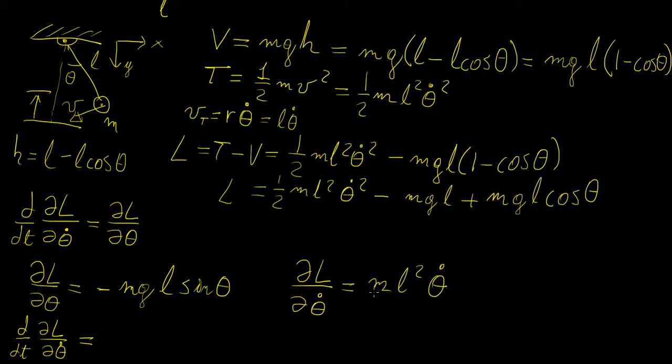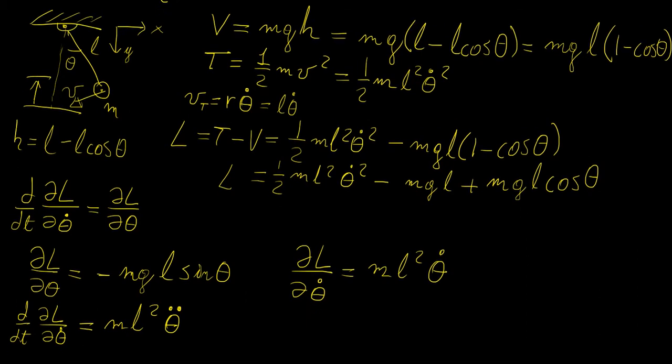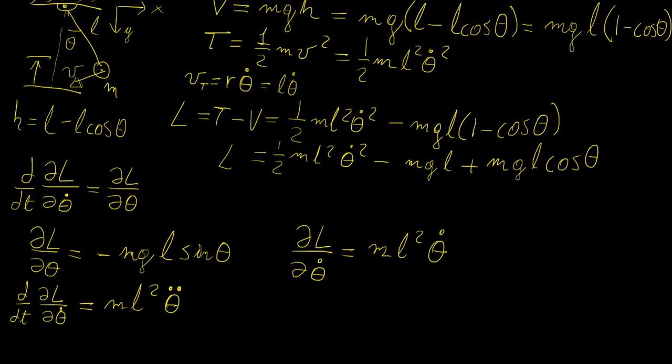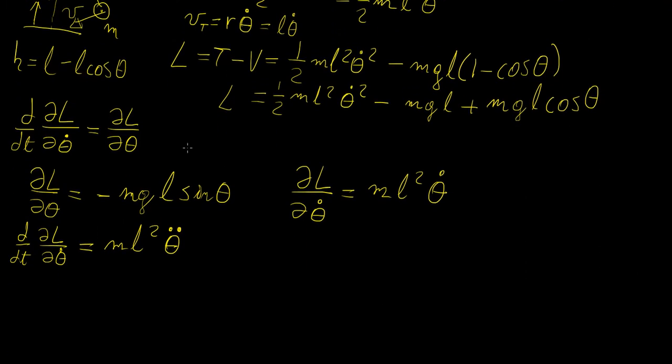take the time derivative of this so we're going to have M L squared, so this becomes theta double dot. So that is pretty much it. So now if we put these things together let's just put it into the equation here: M L squared theta double dot equals to minus Mg L sine theta.